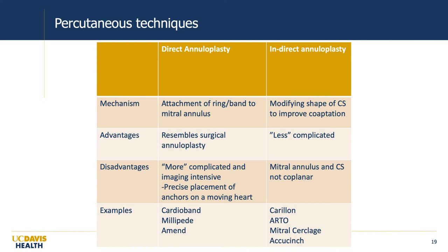Moving on to percutaneous annuloplasty, there are two main categories. Direct annuloplasty mimics surgical annuloplasty by attaching a ring or band directly to the mitral annulus; it's more complicated and imaging-intensive since anchors must be precisely placed in the mitral annulus on a moving heart. Indirect annuloplasty works by modifying the shape of an adjacent structure such as the coronary sinus to improve coaptation. The advantage is that it's less technically complicated — simply place the device in the coronary sinus and cinch it — but the coronary sinus and mitral annulus are not exactly coplanar, often up to a centimeter apart, so moving the coronary sinus doesn't always change the natural annulus shape in a one-to-one manner.